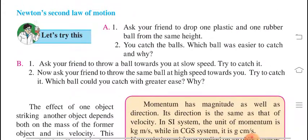For example, ask your friend to drop one plastic and one rubber ball from the same height. The rubber ball will fall down earlier because the rubber ball has more mass compared to the plastic ball, so it falls earlier. The height is the same for both, but the time difference is there. For the rubber ball, suppose one second is needed, but for the plastic ball, one minute is needed. Due to this time difference, velocity changes, and since velocity and mass are changing, the momentum also changes.